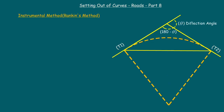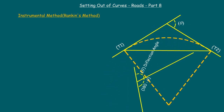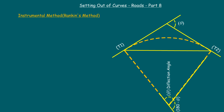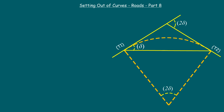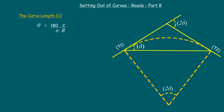As seen in our previous episode, the deflection angle theta at the intersection point is equivalent to the included angle between the two tangent points. One more important thing: the half of the deflection angle, theta by 2, is equivalent to the angle between the tangent line and the chord length. If we name this angle delta, then theta equals 2 delta. Let us remember this as we proceed with the derivation of the formula.